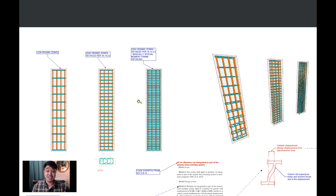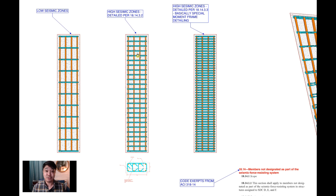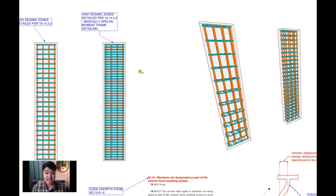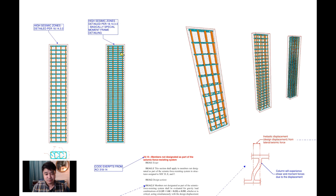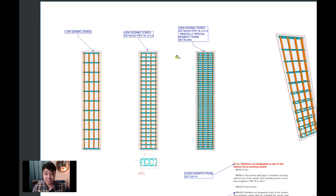Let's first go over some of the differences between non-seismic columns, columns in high seismic zones, and special moment frame columns that are part of the lateral force resisting system of the building. As you can see here, the main differences are basically the hoop spacing. In low seismic zones you can usually get away with a lot of hoop vertical spacing. In high seismic zones, even though they're not part of the lateral force resisting system — a typical gravity column — they're going to have a good amount of reinforcing stirrups and hoops.